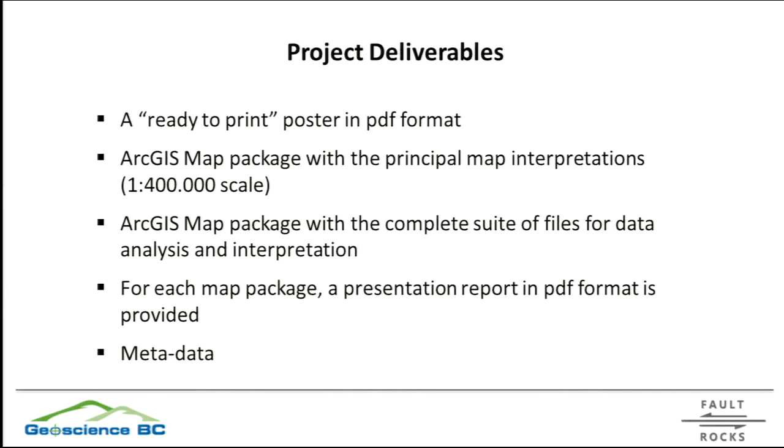The project consists of a series of deliverables and products, which have just been uploaded to the internet and can now be downloaded. First, a ready-to-print poster in PDF format, which is outside in the poster room. Then two ArcGIS map packages — as a map package and also as shapefiles. The principal one is the interpretation map at 1:400,000 scale, and a more elaborated version consisting of the series of layers of interpretation and analysis. You can also download all the filters and transformations performed by Peter, and each map is accompanied by a presentation and metadata.